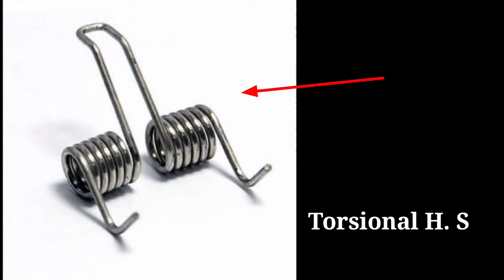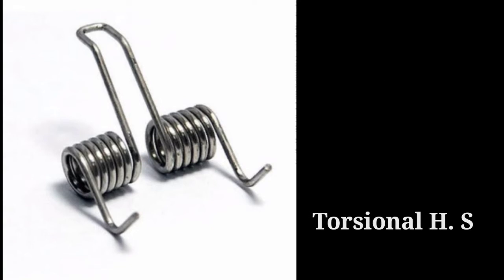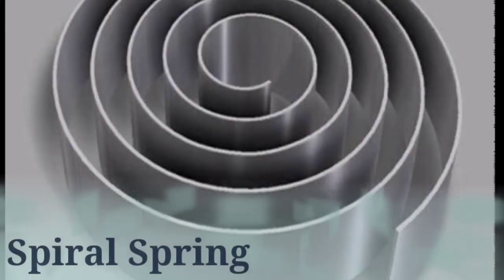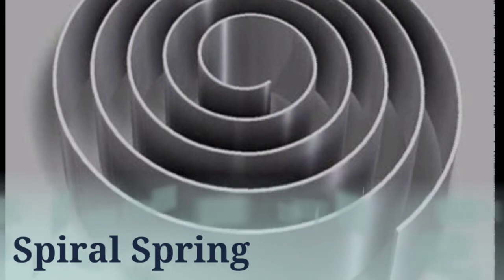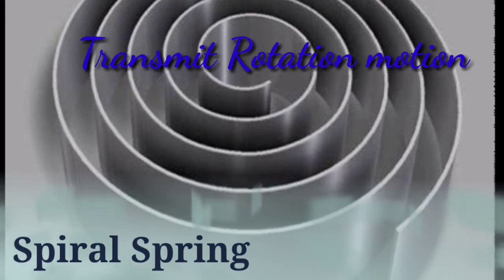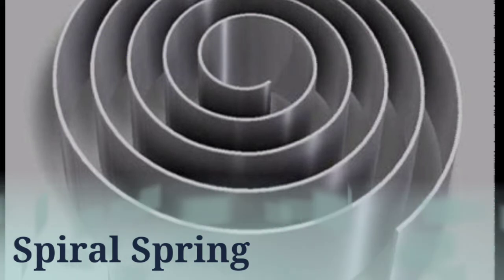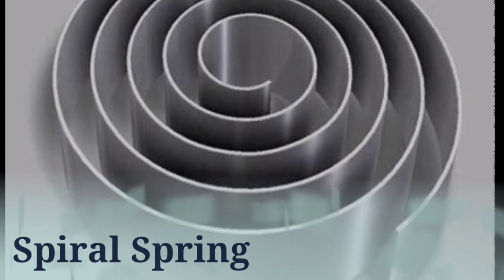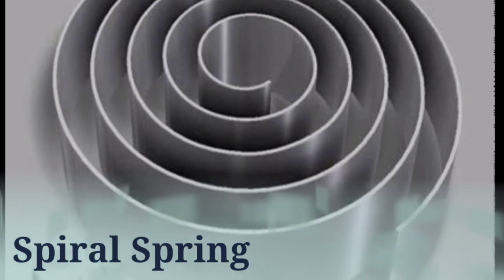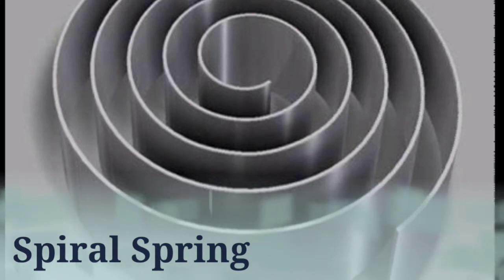Next we will talk about spiral springs. Spiral springs mainly use torsional moment and are used to transmit rotating motion. If we look at their uses: they are found in watches and measurement instruments. In everyday use, the inch tape is an example — when you open the tape it extends easily, and when you release the free end it coils back.